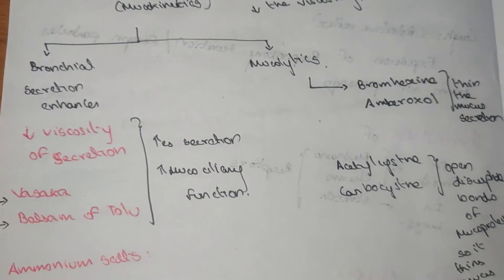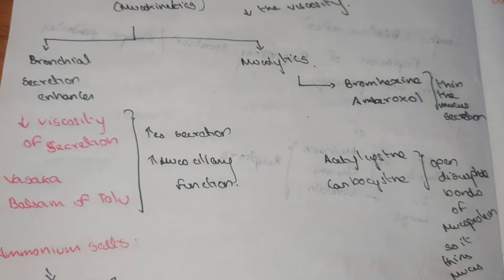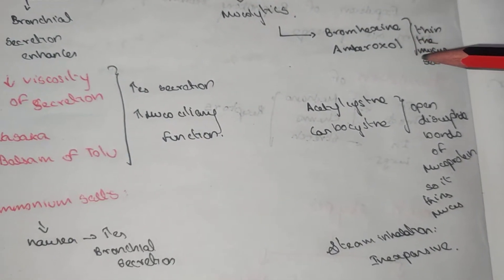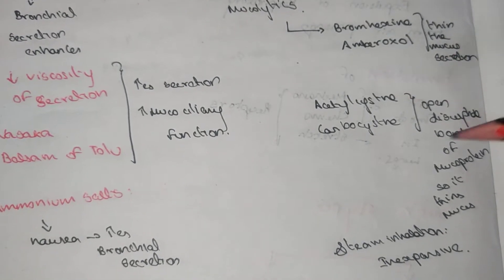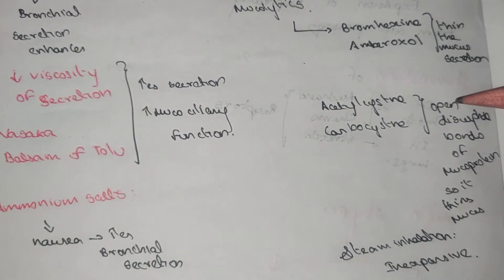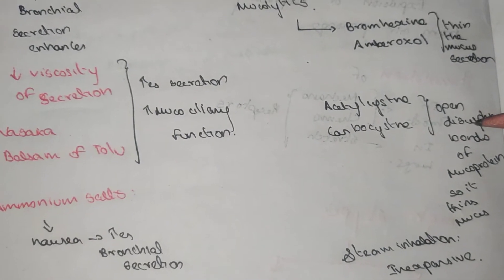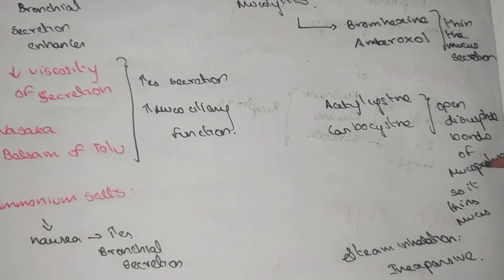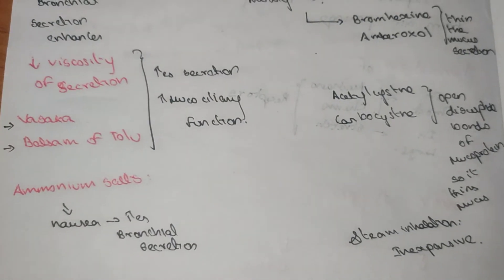Ammonium salts are also used to increase the bronchial secretion. The mucolytics are bromhexine and broxol. Acetylcysteine and carbocysteine are also used to open the disulfide bonds which are present in the mucus in the form of mucoproteins, so there is thin mucus. Steam inhalation is another process which is inexpensive.